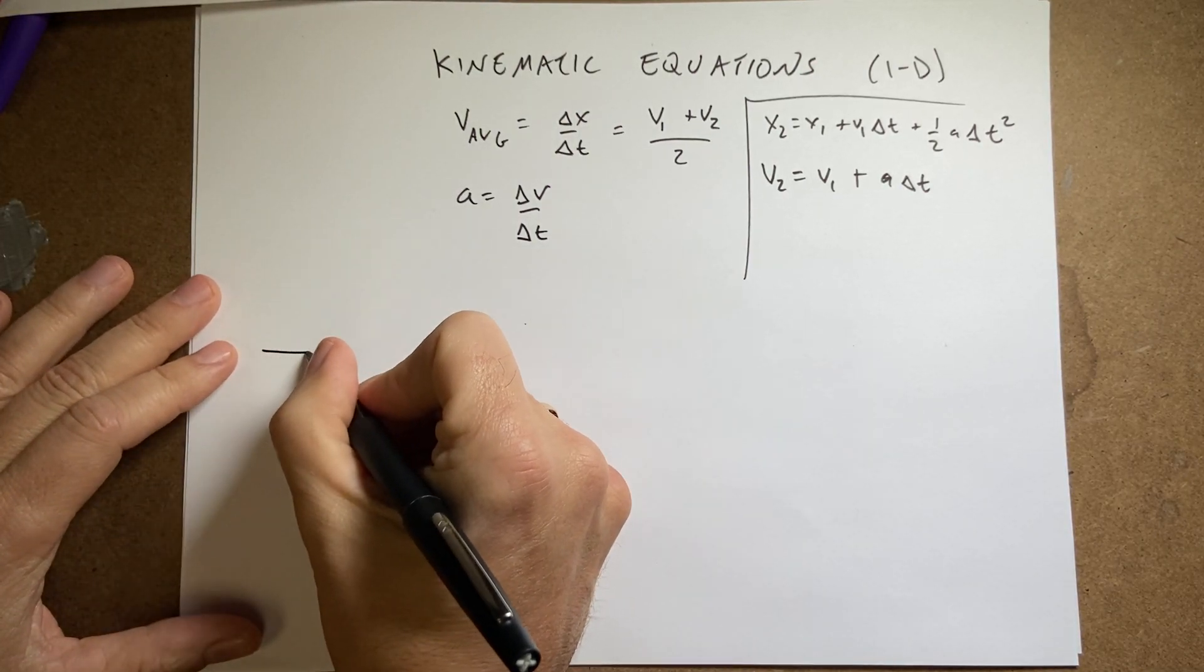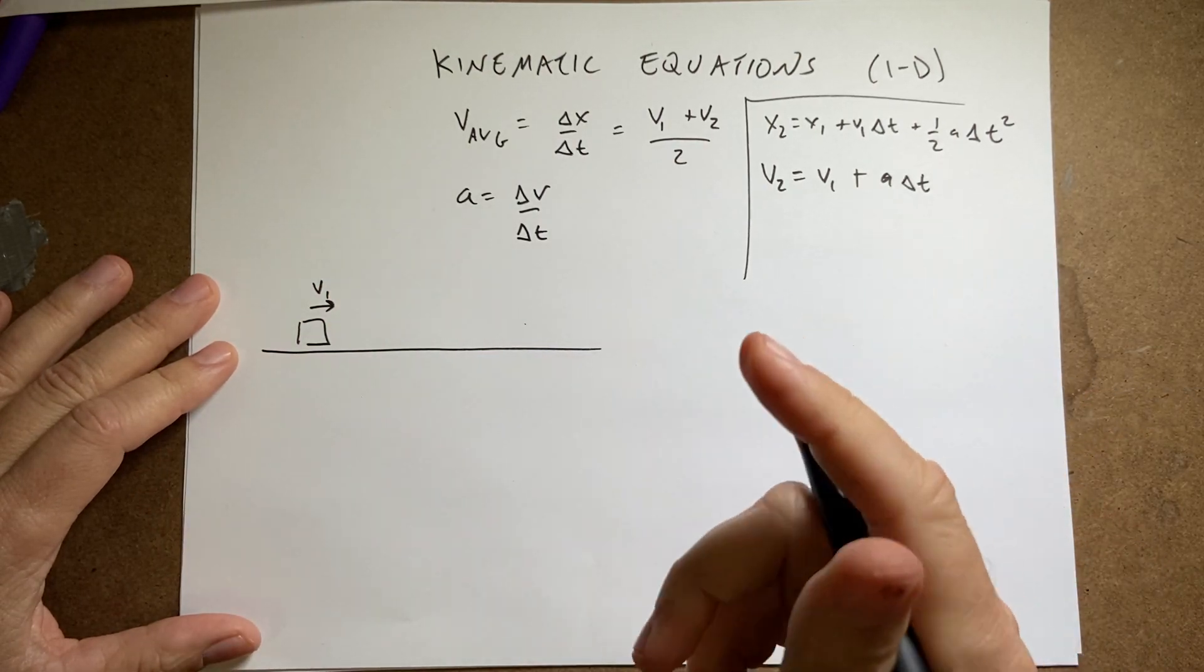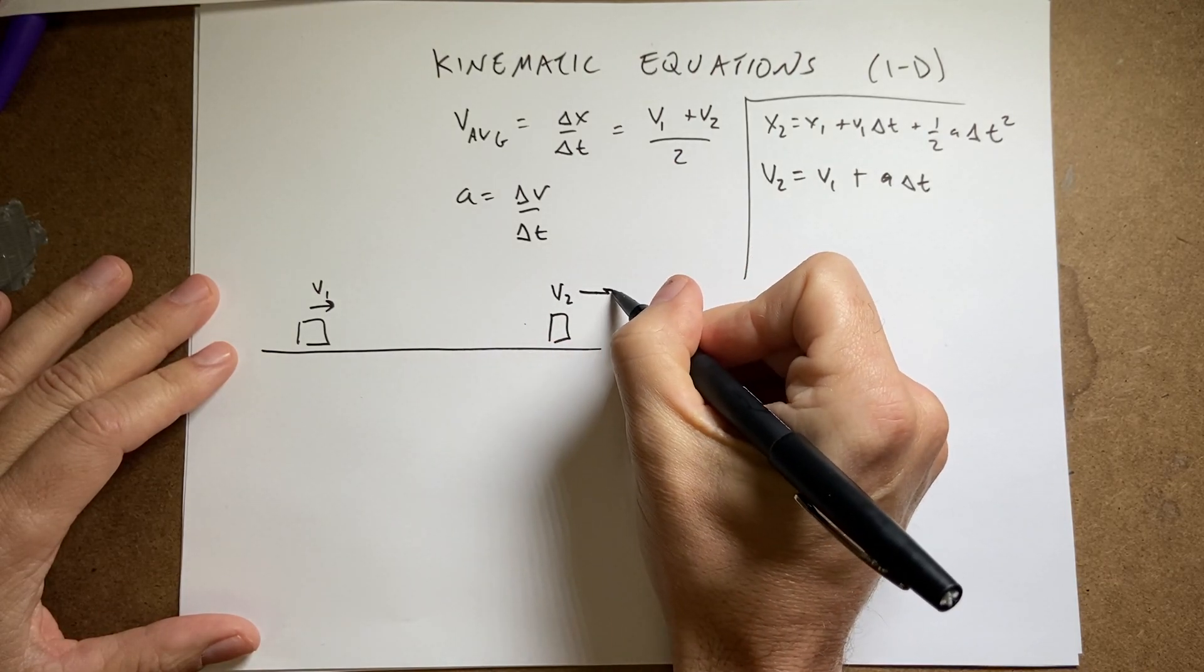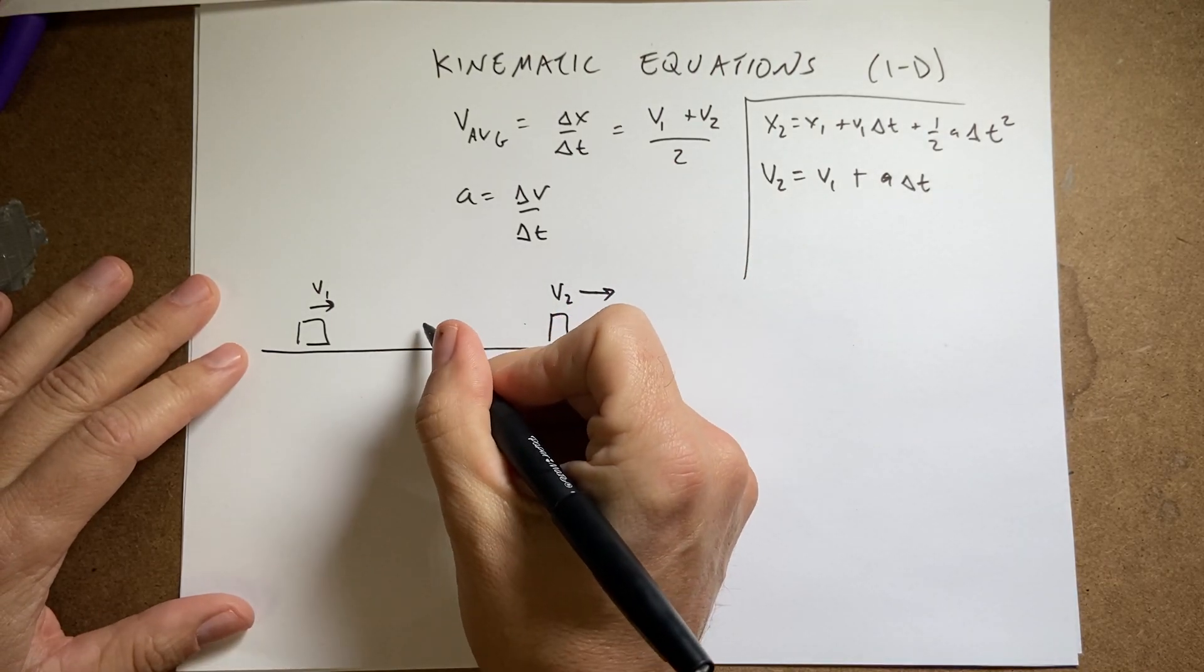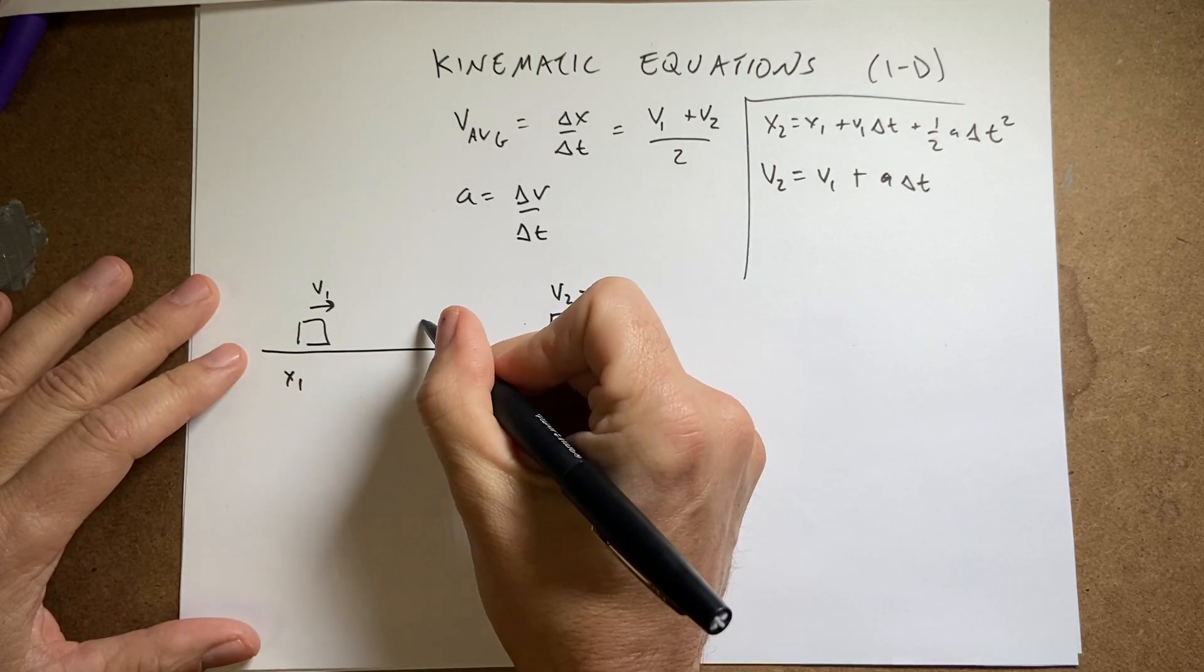Okay, so let's imagine the following situation. Here's a car. It starts with the velocity v1, and this is in one dimension. And it comes over here, and it has a velocity v2. It's going faster. And it traveled a distance. It started at x1 and x2 and it has an acceleration a.